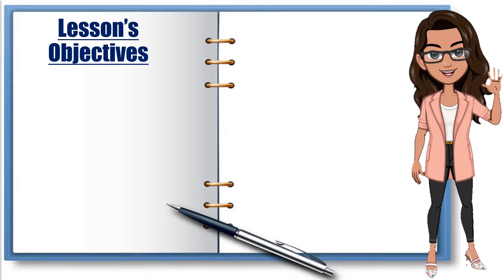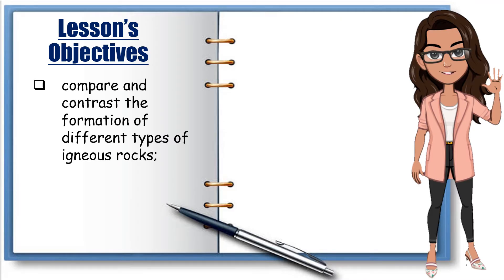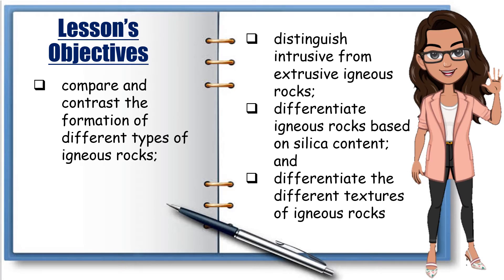You will have to state that Igneous Rocks are divided into two types, namely Intrusive Igneous and Extrusive Igneous Rocks. Specifically, this module will help you to compare and contrast the formation of different types of Igneous Rocks, distinguish Intrusive from Extrusive Igneous Rocks, differentiate Igneous Rocks based on silica content, and differentiate the different textures of Igneous Rocks.